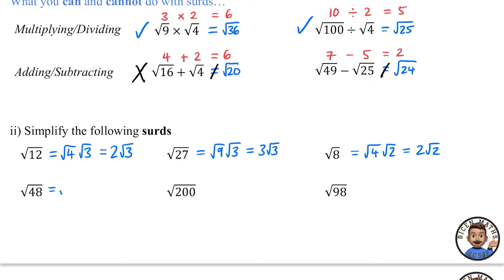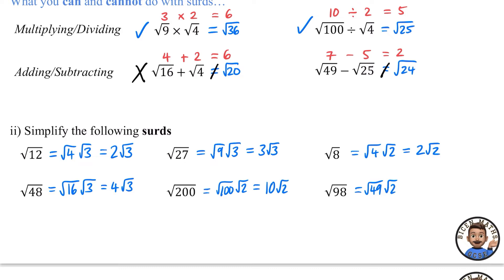If you chose 4 and 12 instead of 16 and 3 for √48, you'd get √4 × √12 = 2√12 and would need to simplify again — a longer process. For √200: use 100 × 2, so √100 × √2 = 10√2. And √98: use 49 × 2, so √49 × √2 = 7√2.